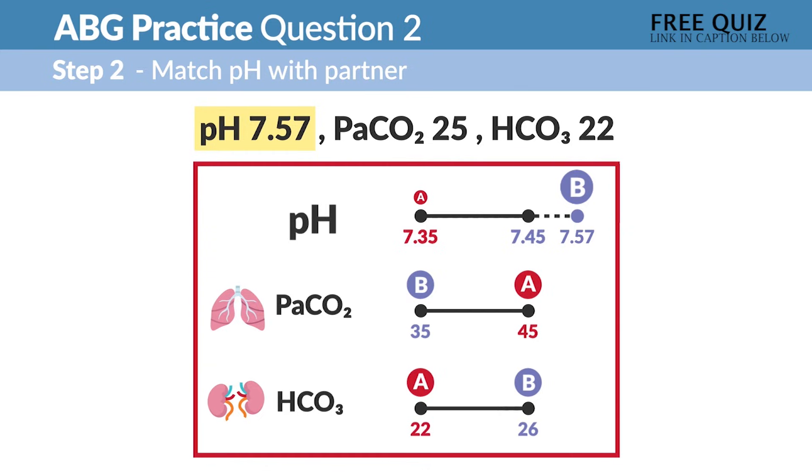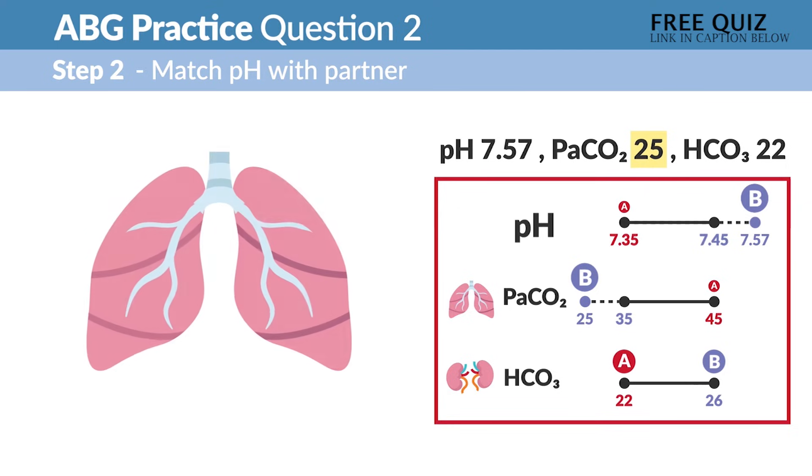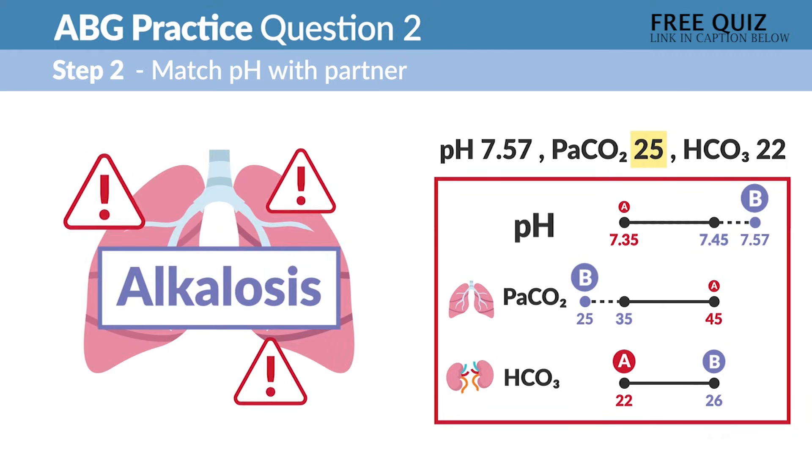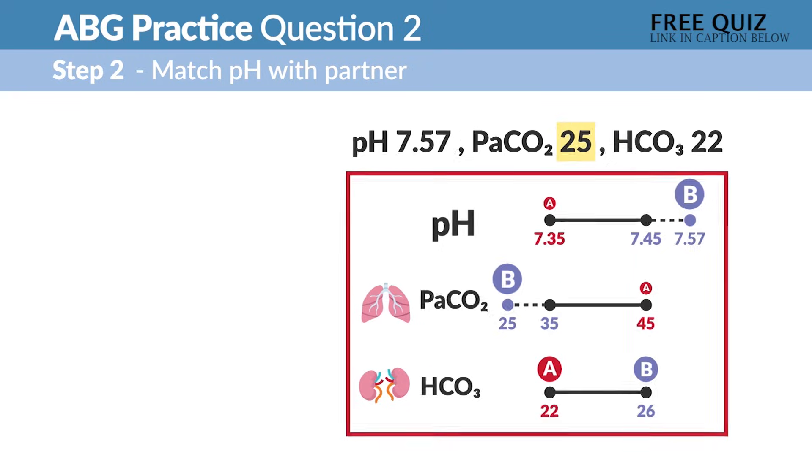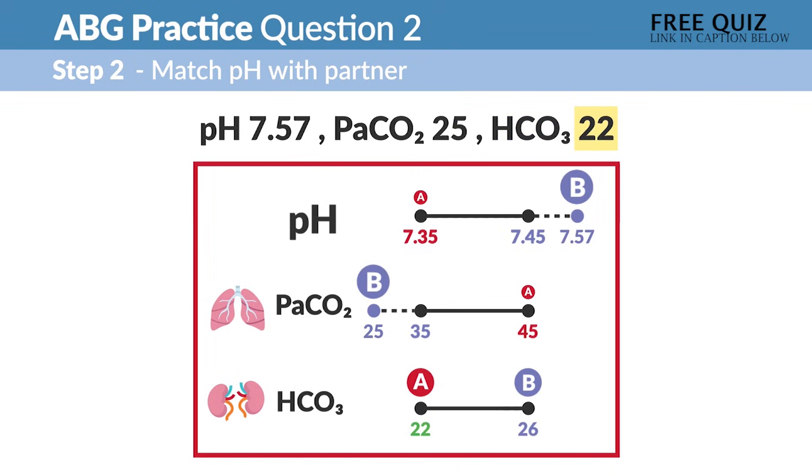Now step two, we have to find that alkalosis match. So CO2 is 25, that's pretty low, so that is base as well, an alkalosis, and the respiratory icon, we have a match for respiratory alkalosis it looks like.